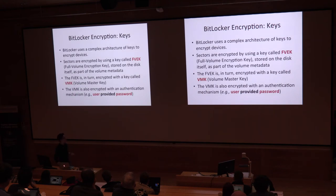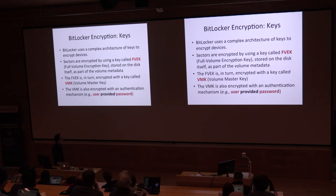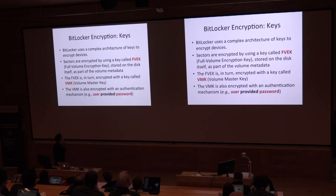How does it work? During the encryption procedure, BitLocker uses two different types of encryption key. The first key is called the Full Volume Encryption Key, which is used by BitLocker to encrypt the sectors of the memory device. The key is stored in the encrypted memory unit, and the key is encrypted in turn with the Volume Master Key.